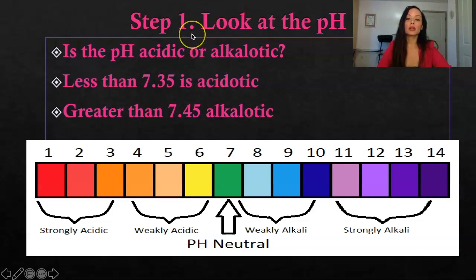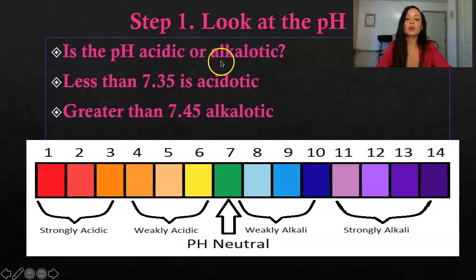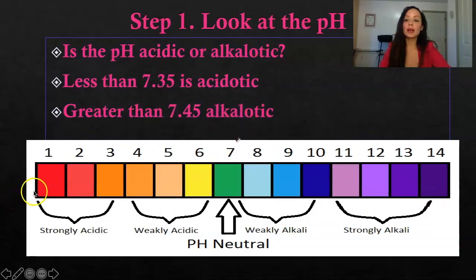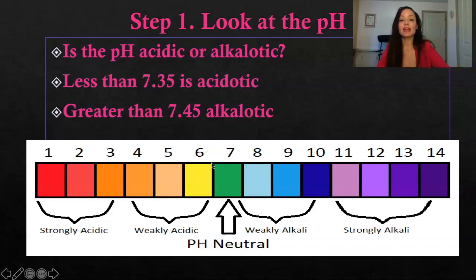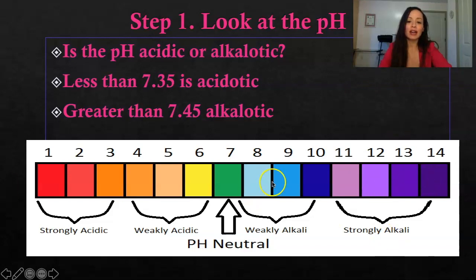Step number one when you are interpreting ABGs: you want to look at the pH and ask yourself, is the pH acidic or alkalotic? No one is going to be extremely acidic or extremely basic, but the way it goes — if the number is lower, we say that is acidic. The higher the number, the more alkalotic. Think like baking soda versus lemon juice, which is very citrusy and acidic.